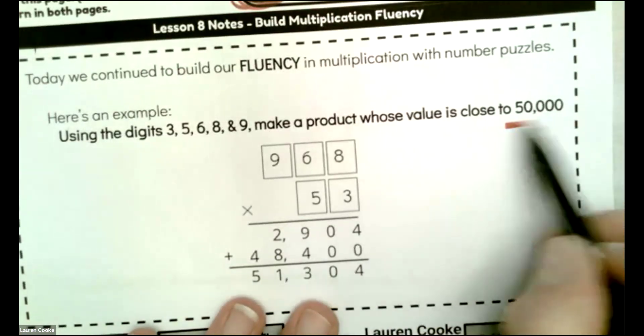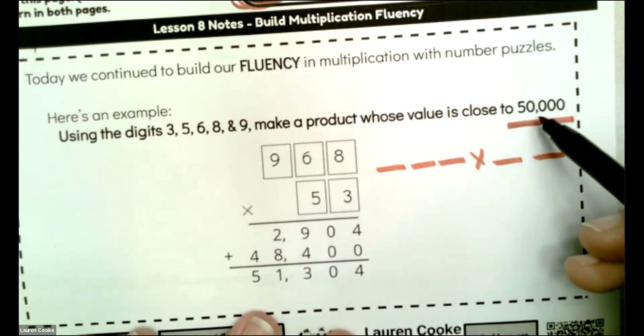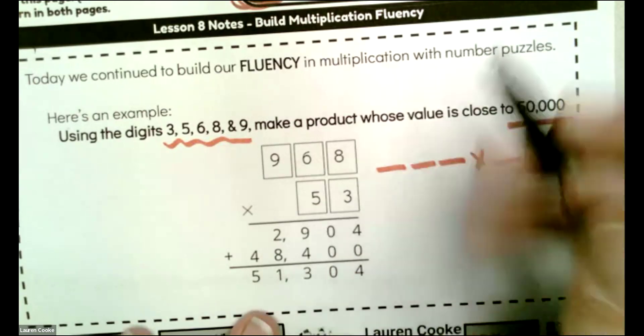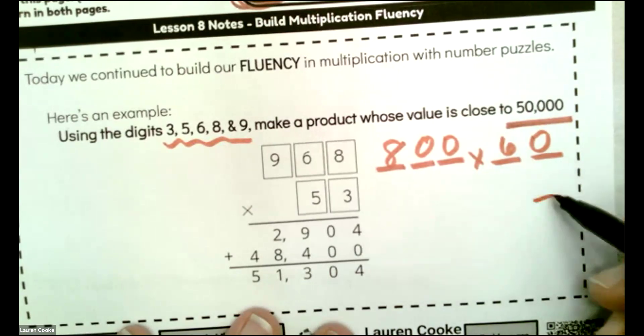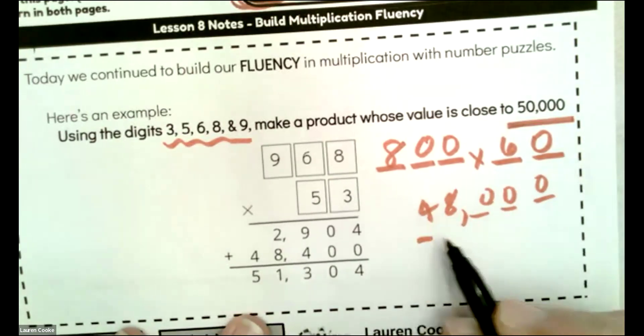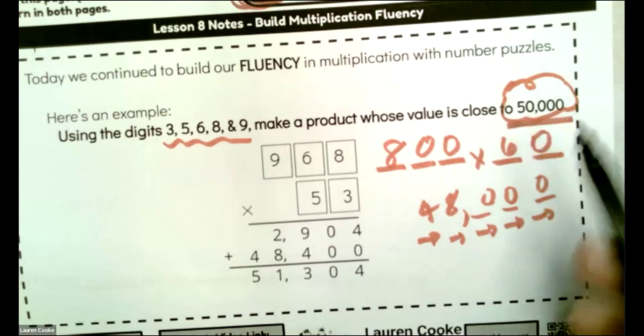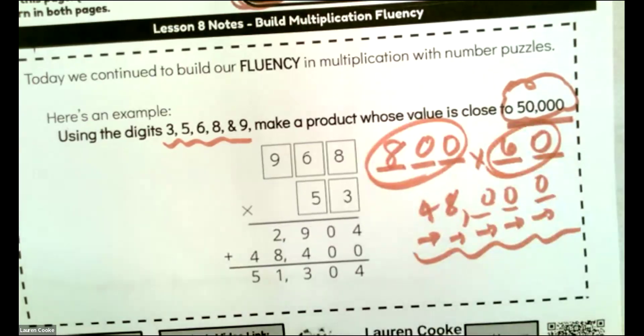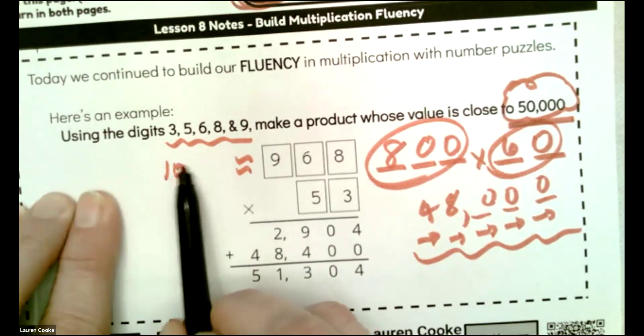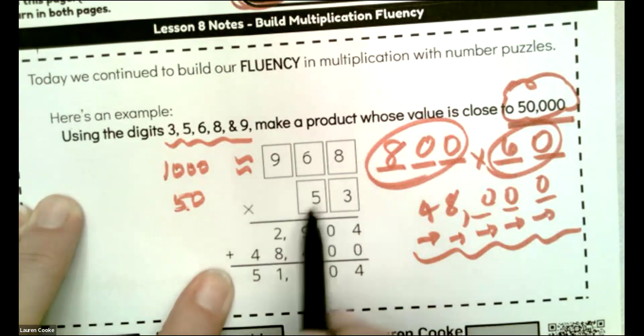So we have $50,000 to get to and a hundreds place and a tens place to work with. So if I have to get to 50,000, I have a hundreds place. And these are the only numbers I have. I'm thinking, you know what? I have an eight. So I'm going to go like 800 and then 60. And then I have one, two, three place values. And then eight times six is 48. That's pretty close.